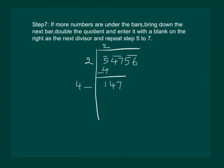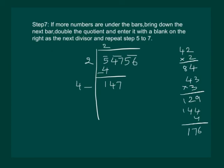Now we have to guess the number in the blank. Let us do some rough work for guessing. If we take 42 into 2, it will be 84. Let us see, 43 into 3, that will be 129. If we take 44 by 4, it will be 176. But we have to choose the number which brings a number less than 147. So the next number is 3.